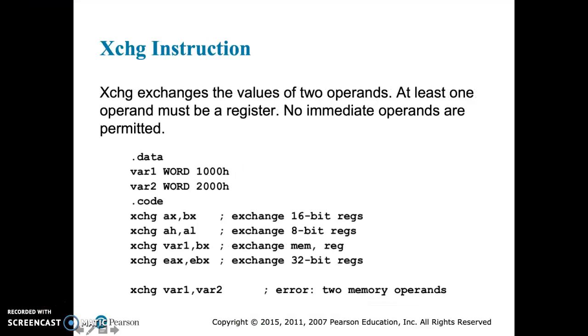Next, we have the exchange instruction. Exchange has the same basic parameters or requirements as the MOVE instruction, and it, as its name implies, exchanges the values of two operands. One difference is though, you can't use immediate. And one of the operands has to be a register. So you can go register to register, register to memory, or memory to register.